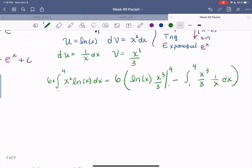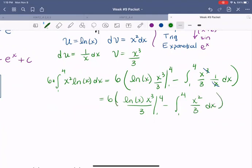Still having 6 multiplied by everything, we have ln of x times x cubed over 3 evaluated at 1 and 4, minus the integral from 1 to 4. Notice x in the numerator cancels with x in the denominator, leaving x squared over 3 dx. This whole part is multiplied by 6.